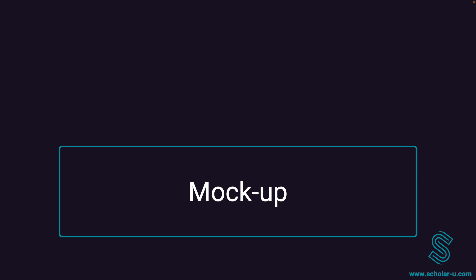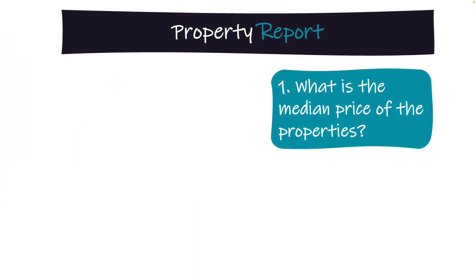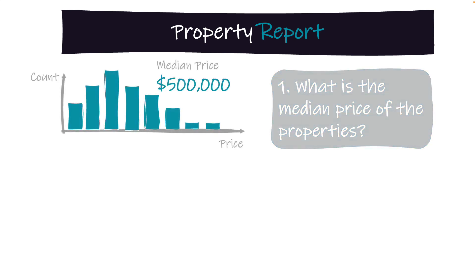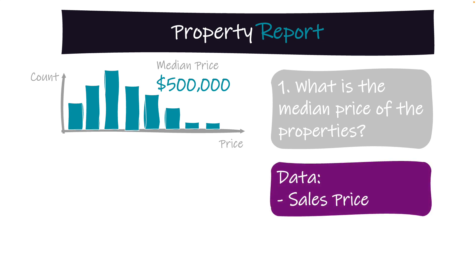We've narrowed down the problem statement into four main questions that we want to answer in our dashboard. The first question we want to answer is: what is the median price of the properties that have sold? To do this, we propose to create a histogram that shows the distribution of the properties based on their prices, and we suggest adding a scorecard right in the middle that shows the median price of all the properties that have sold. For this, we're going to require the sales price for each one of the properties.